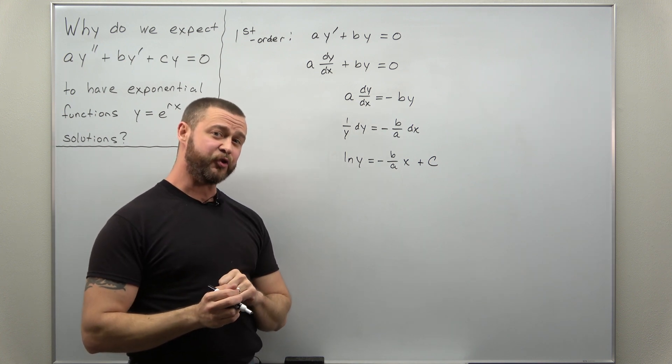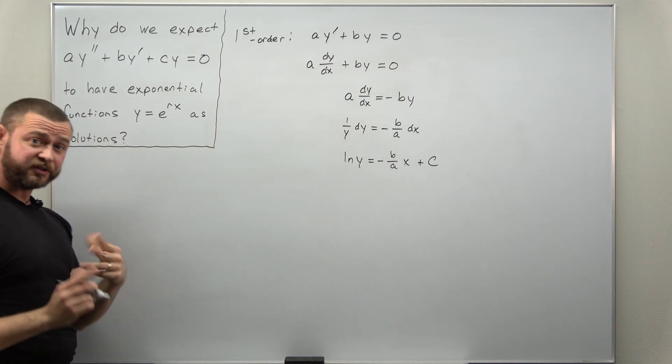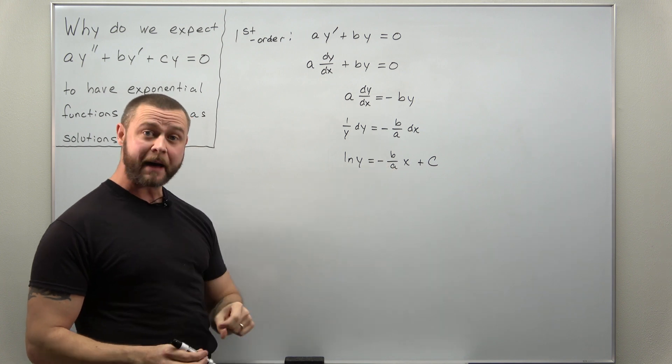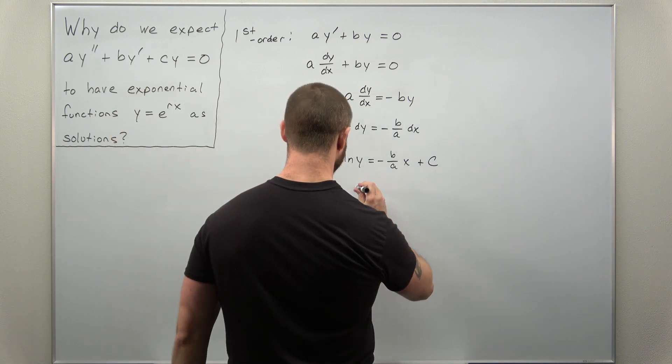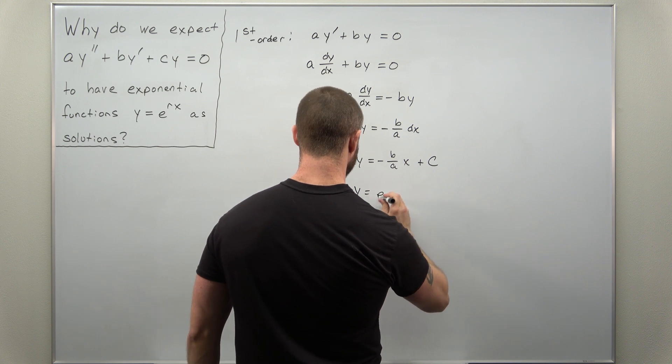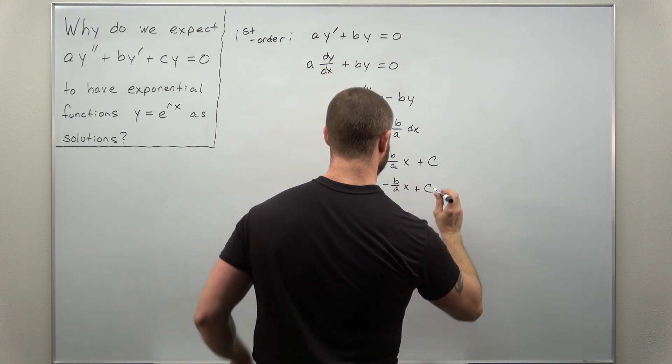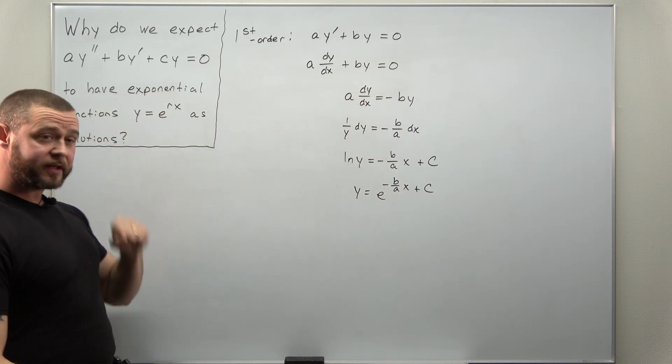This is an implicit solution. To kind of answer our question, we'll want an explicit solution. So we'll want to solve this for y. I can do that by exponentiating both sides base e. And we're going to make it look exactly like this.